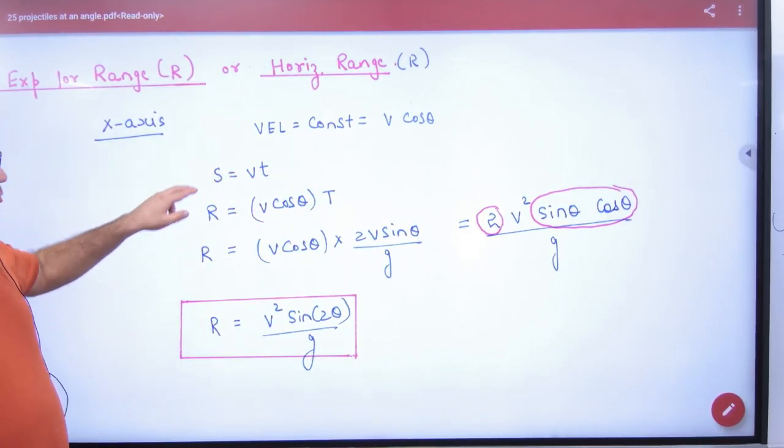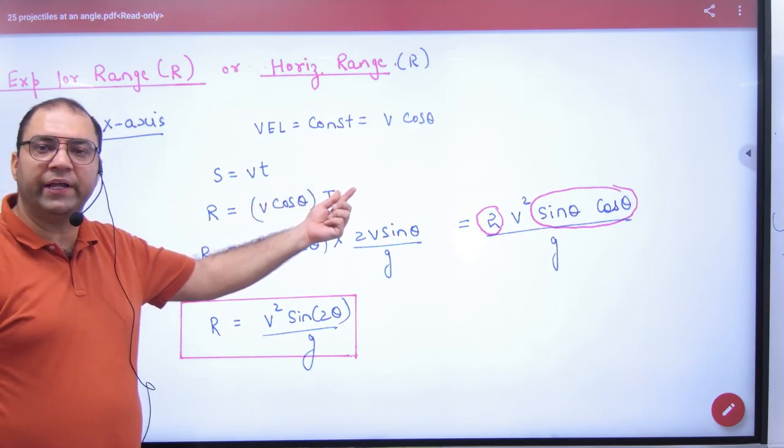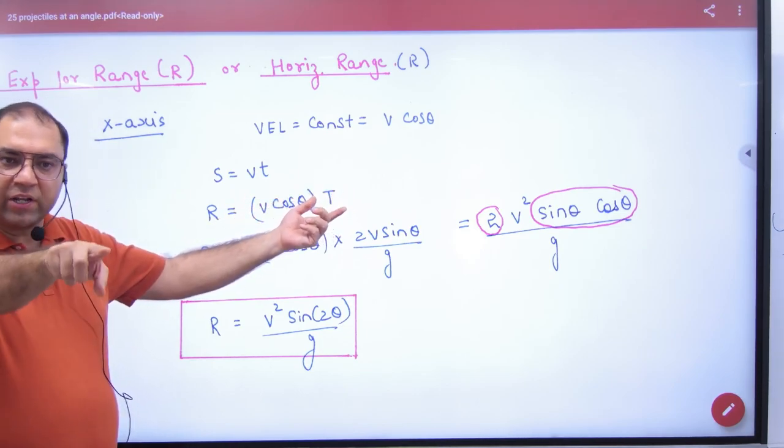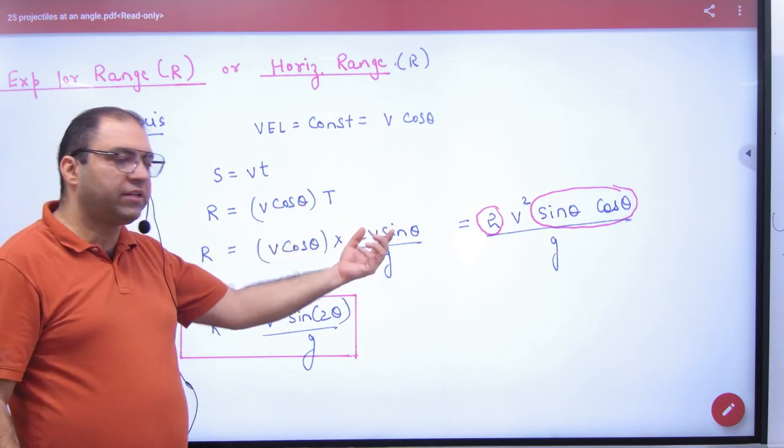What will we put in the distance? r. Velocity v cos theta into capital T time of flight. Capital T has already been derived. How much? 2v sin theta by g.